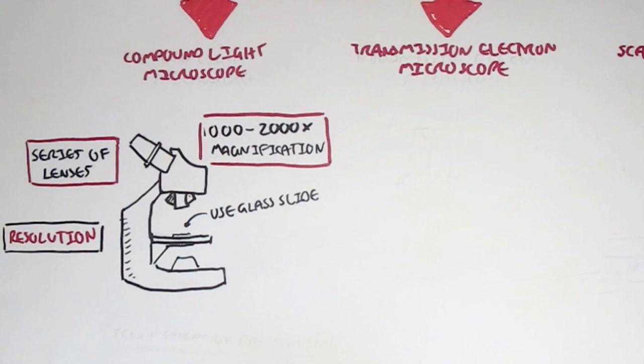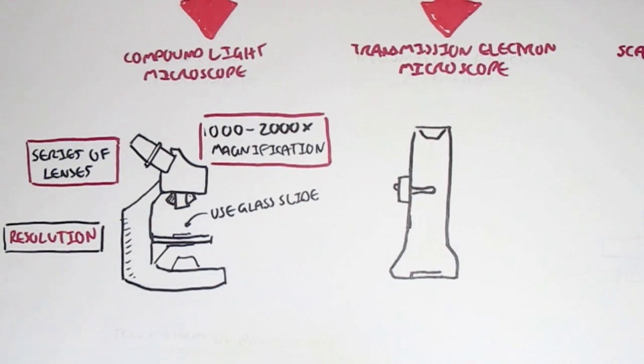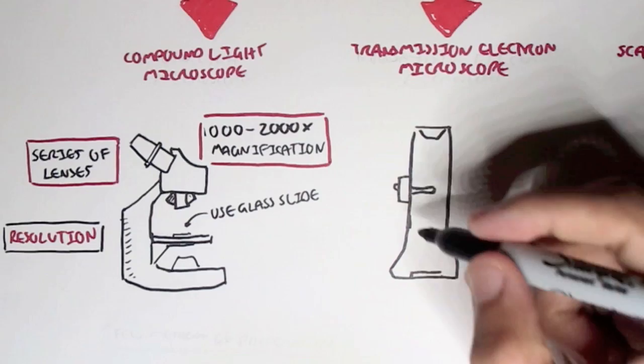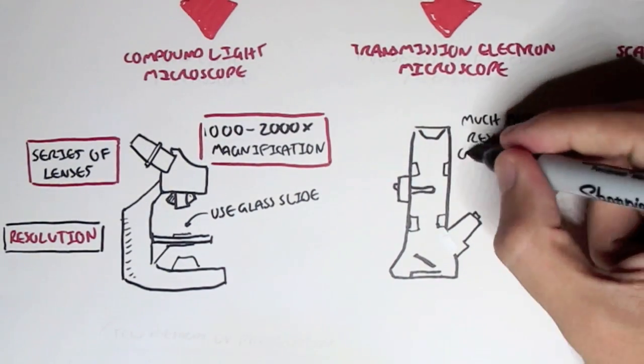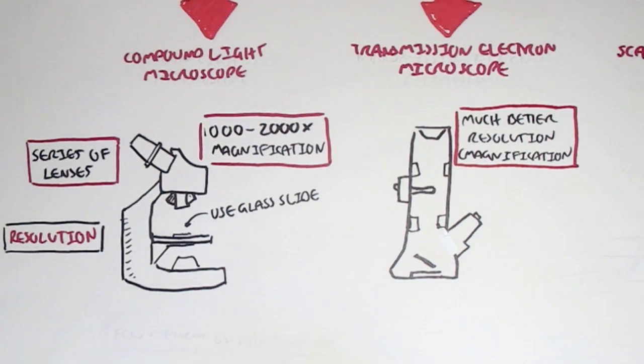Now, the next type of microscope is a Transmission Electron Microscope. And these have much better resolution, magnification, than the Compound Light Microscope. So we can see better detail of these microorganisms.